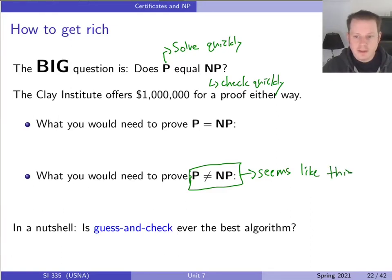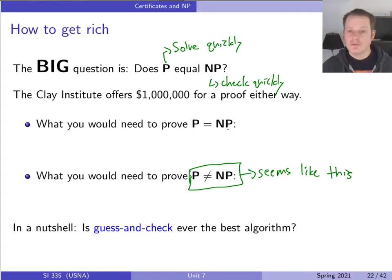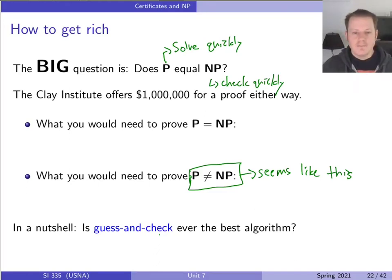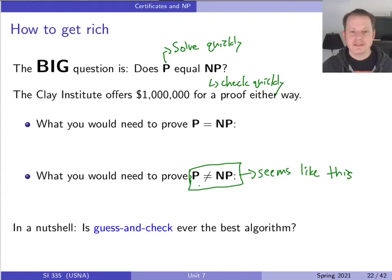Very interestingly, we don't have any proof of that. It could be the case that P equals NP, meaning all problems we can check quickly can also be solved quickly, even though nobody has found algorithms to do that. Another way of phrasing this: is guess-and-check ever the best we can do? Most people — around 90% of researchers who work on these questions — say all the evidence points to P not equal NP, but we don't have any proof of that yet.